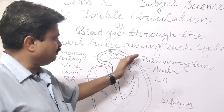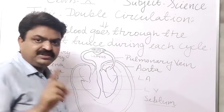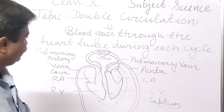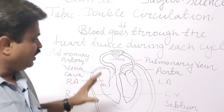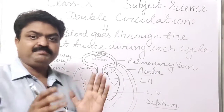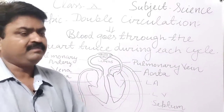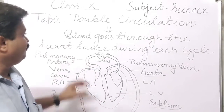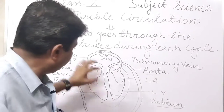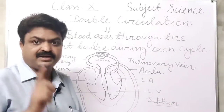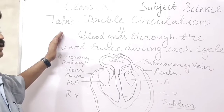The pulmonary vein is connected with the lungs and it carries oxygenated blood. The pulmonary artery carries deoxygenated blood. Our heart works as a pumping station in which the blood is pumped. Blood goes through the heart twice during each cycle — each heart cycle — and that circulation is known as double circulation.